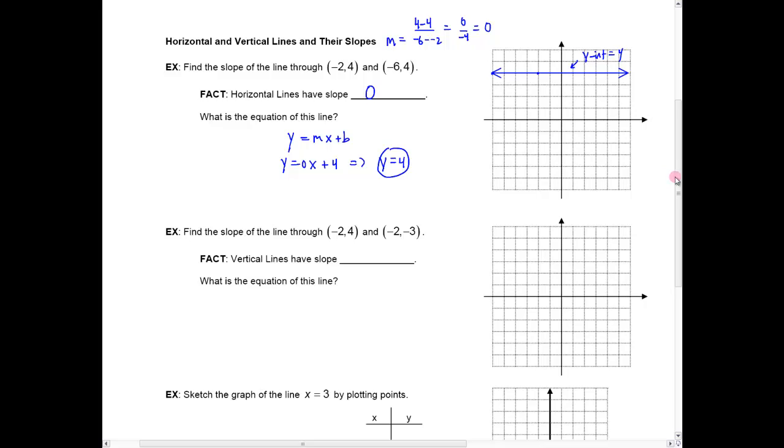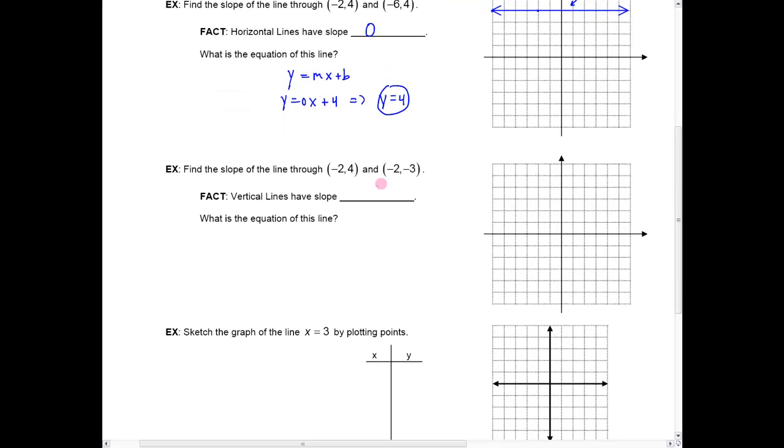Now, if I move to this next line that goes to the point negative 2, 4, and negative 2, negative 3, here we have a vertical line.